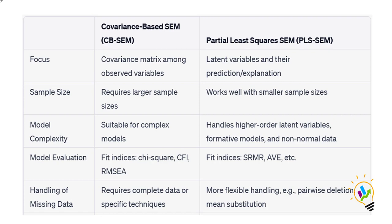The first feature is focus. Covariance-based SEM primarily focuses on estimating and analyzing the covariance matrix among observed variables. It aims to estimate the magnitude and direction of relationships between variables based on covariance. That is why in AMOS we have CFA — confirmatory factor analysis — where the correlation between variables is central.